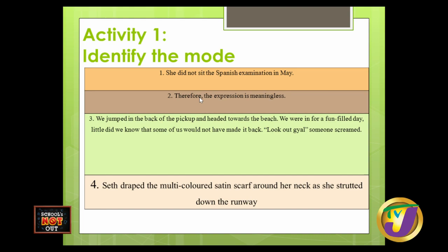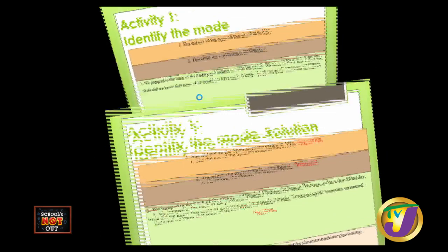Let's see if those answers are correct. You said exposition for the first — you are indeed correct. You said persuasion for the second — you are indeed correct. Then you said narration because you saw the dialogue — yes. And the last one was description — correct. So those are the four modes, and we have shown you how to identify each.